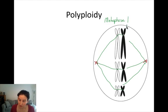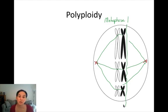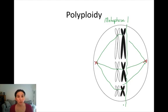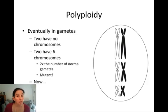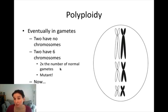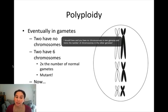So in the first division of meiosis, the resulting cells will have twice the number of chromosomes that should be there in one cell, and no chromosomes in the other. Going through the rest of meiosis, you end up with no chromosomes in one gamete and double the number — in this case six chromosomes — in the other. This is our mutant gamete.